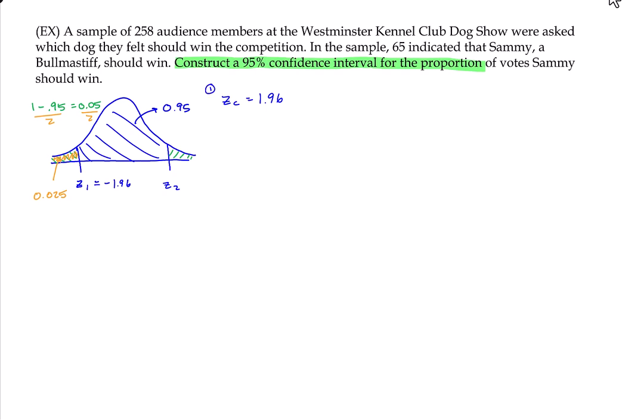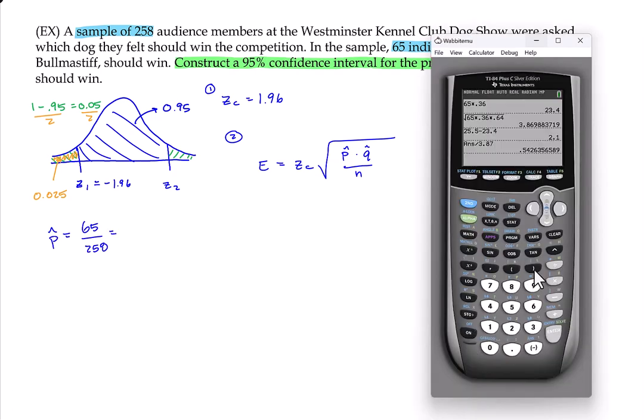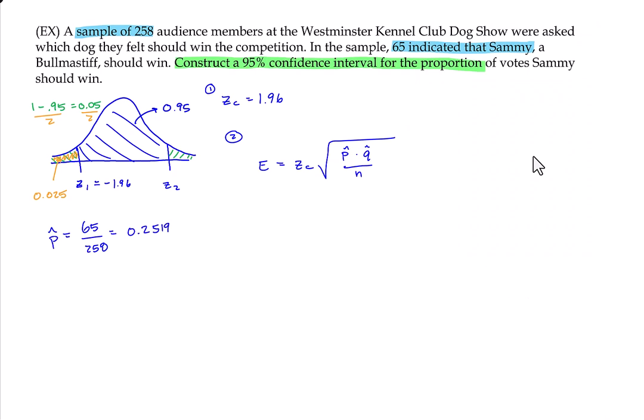The second step is to get the margin of error. The margin of error was a formula, which was the critical value that we just found times the square root of p-hat times q-hat all over n. So let's figure out what p-hat is. So p-hat is the proportion out of the sample that favor the event that we're interested in. So our sample has 258 audience members. 65 favor Sammy to win. So 65 over 258. That is 0.2519 just to do a couple of extra decimals while we're calculating.